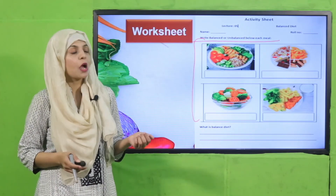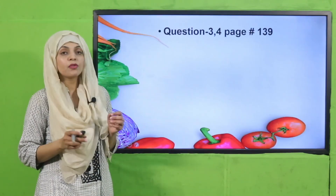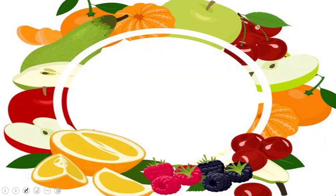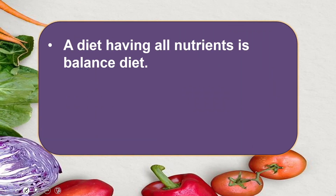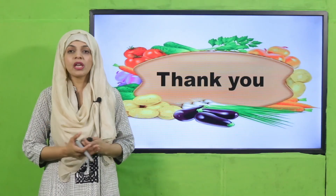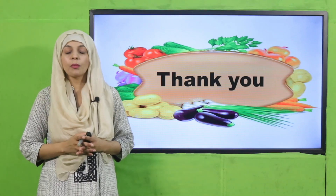I hope everybody has finished. For homework, you will do question number 3 and 4 on page number 139: define balanced diet and what are the harms of taking a poor diet. Use your notebook for this purpose. For wrap-up: today we learned that a diet having all nutrients in balance is a balanced diet. We should take all nutrients in our meals, and if we skip any nutrient for a long time we will become ill. I hope you enjoyed today's lecture — keep everybody around you safe, take a balanced diet, stay healthy. Thank you so much.